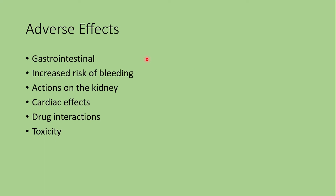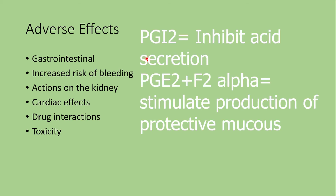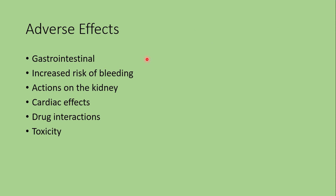The adverse effects of NSAIDs include gastrointestinal effects, which are the most common, ranging from dyspepsia to bleeding. Prostaglandin I2 inhibits gastric acid secretion, while prostaglandin I2 and F2-alpha stimulate synthesis of protective mucus in both the stomach and small intestine. Agents that inhibit COX-1 — all NSAIDs except the COX-2 selective ones — lead to GI risk because they inhibit these prostaglandins, resulting in less protective mucus and more acid secreted.